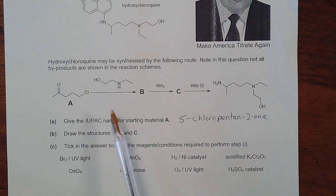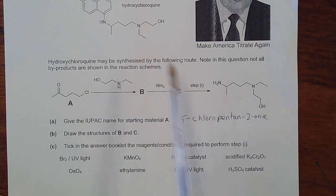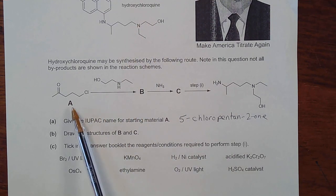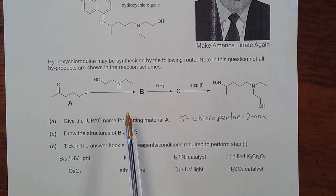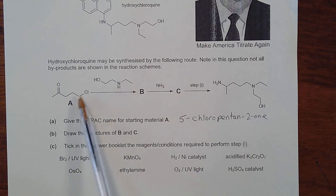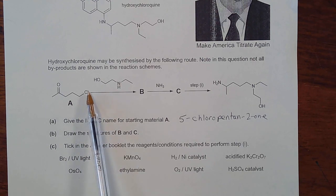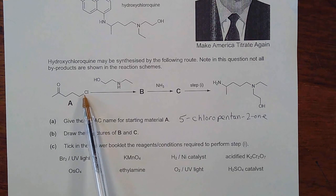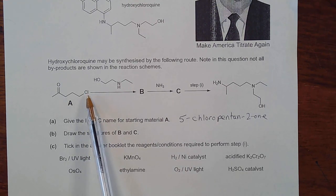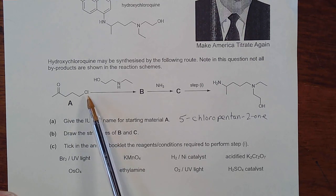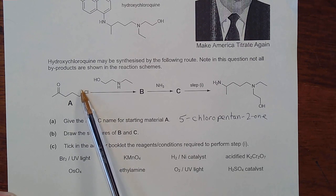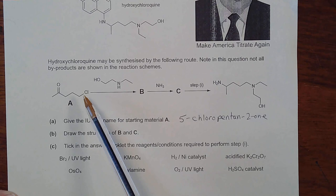Moving on to the structures of B and C, it's important to keep the target structure in mind. Going from A to B involves bringing these two structures together. A carbon–chlorine bond has a relatively longer bond length and can be easily replaced by nucleophilic substitution, where the chlorine leaves and the bond pair becomes a lone pair on the chloride ion.